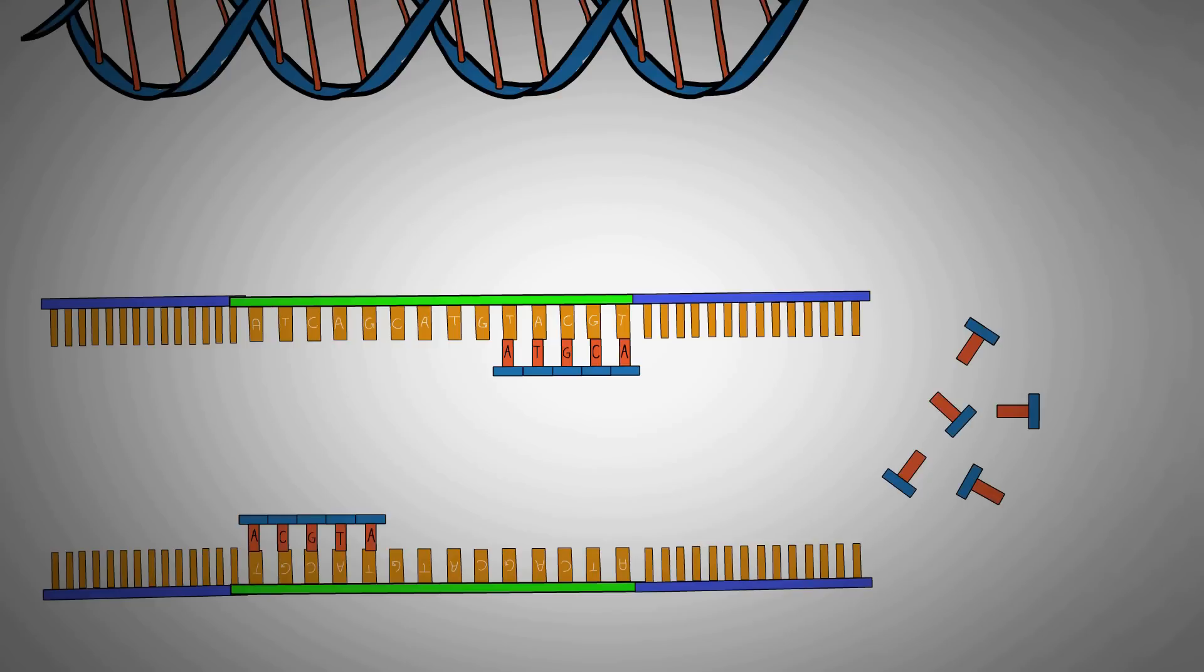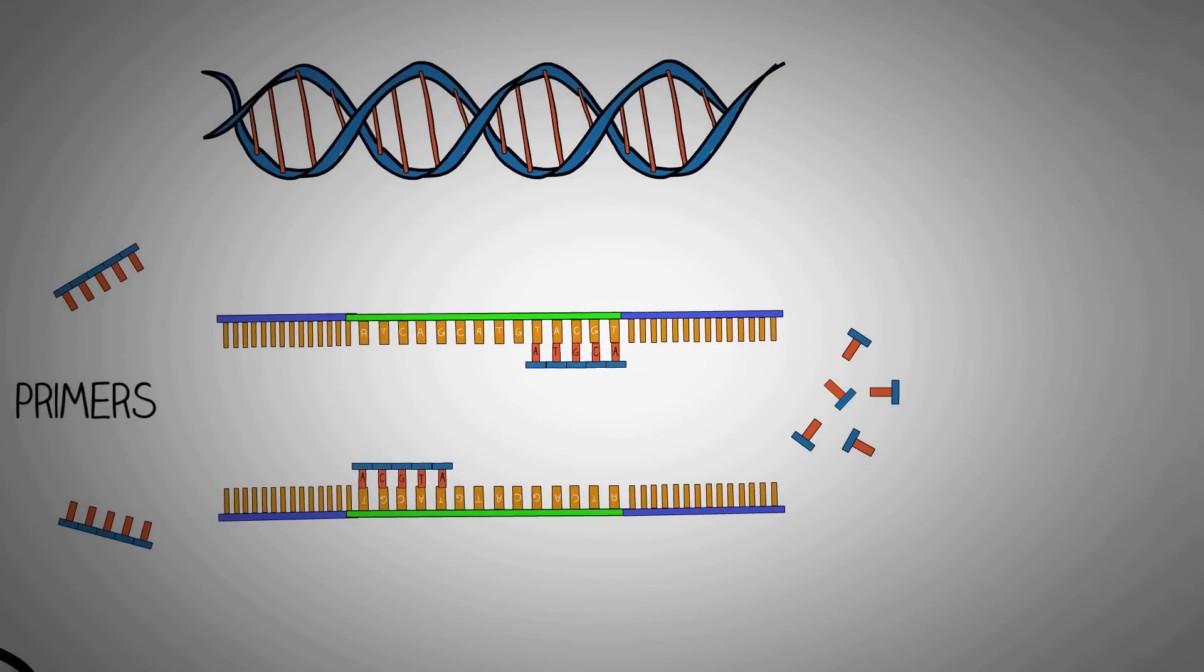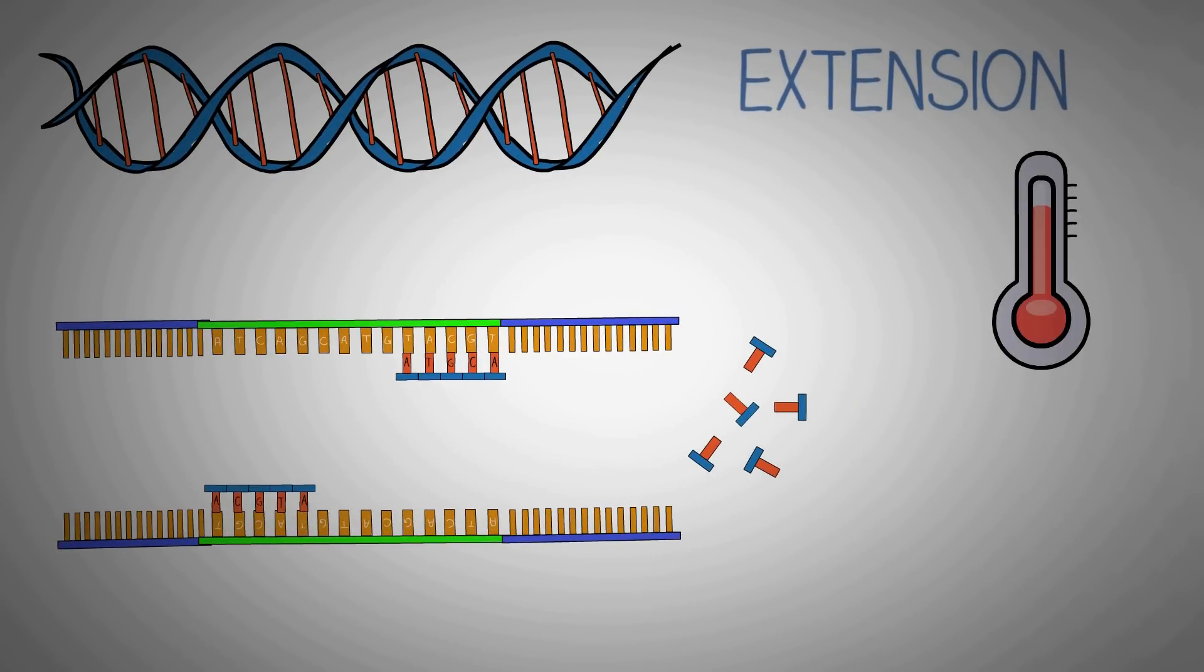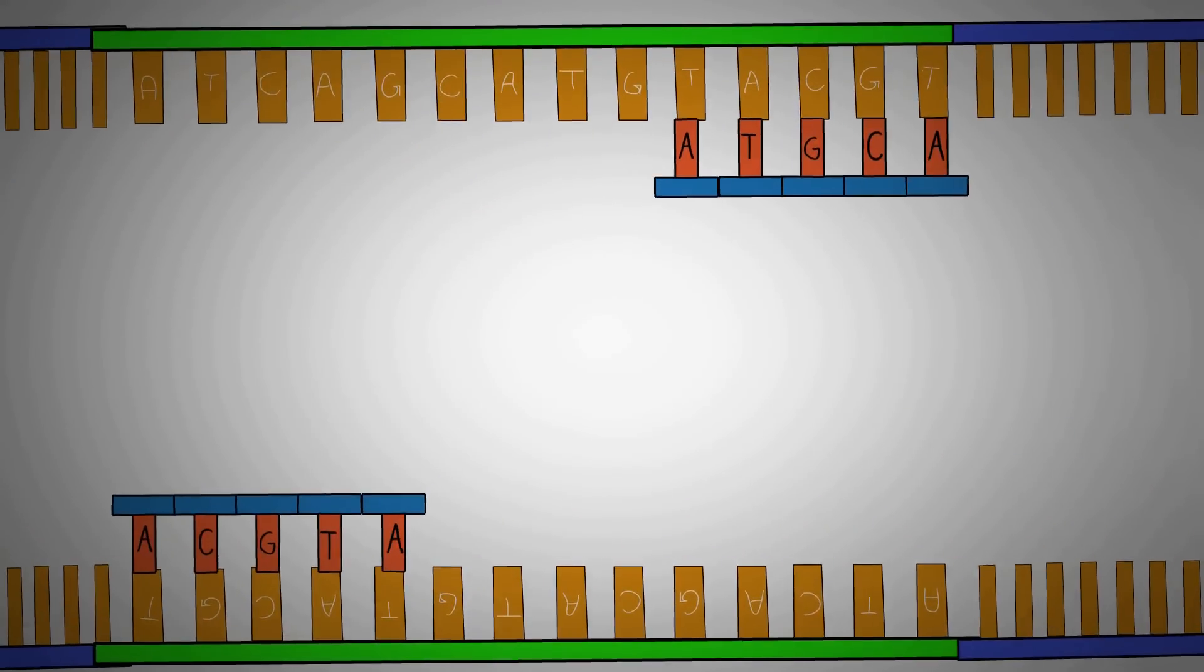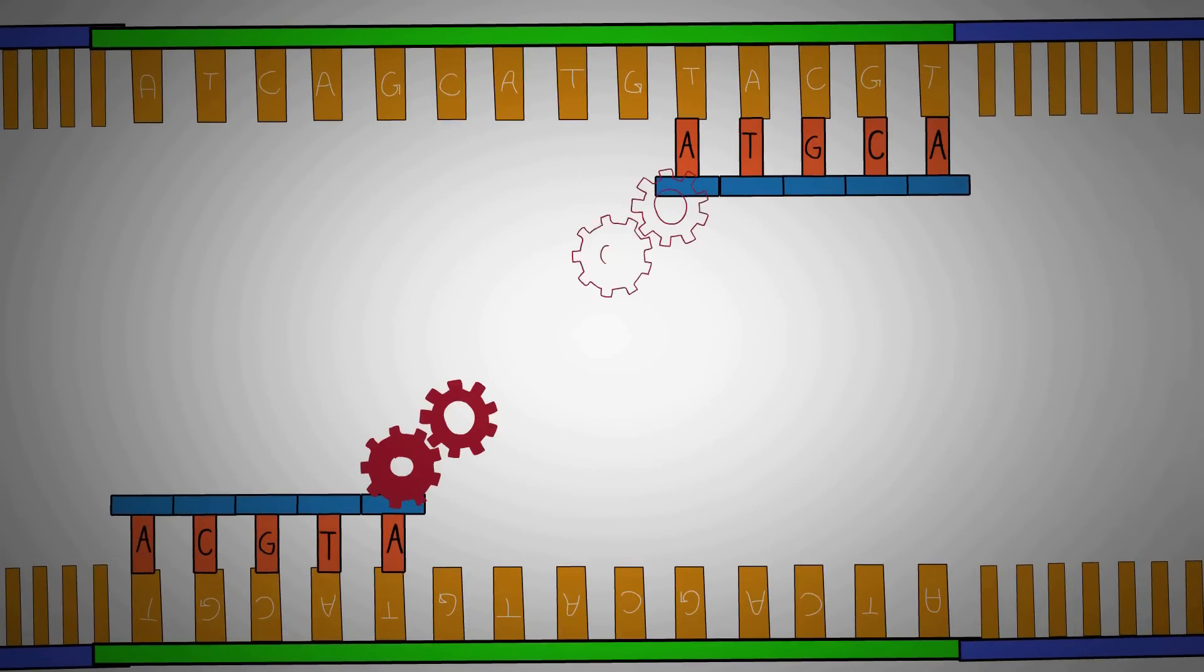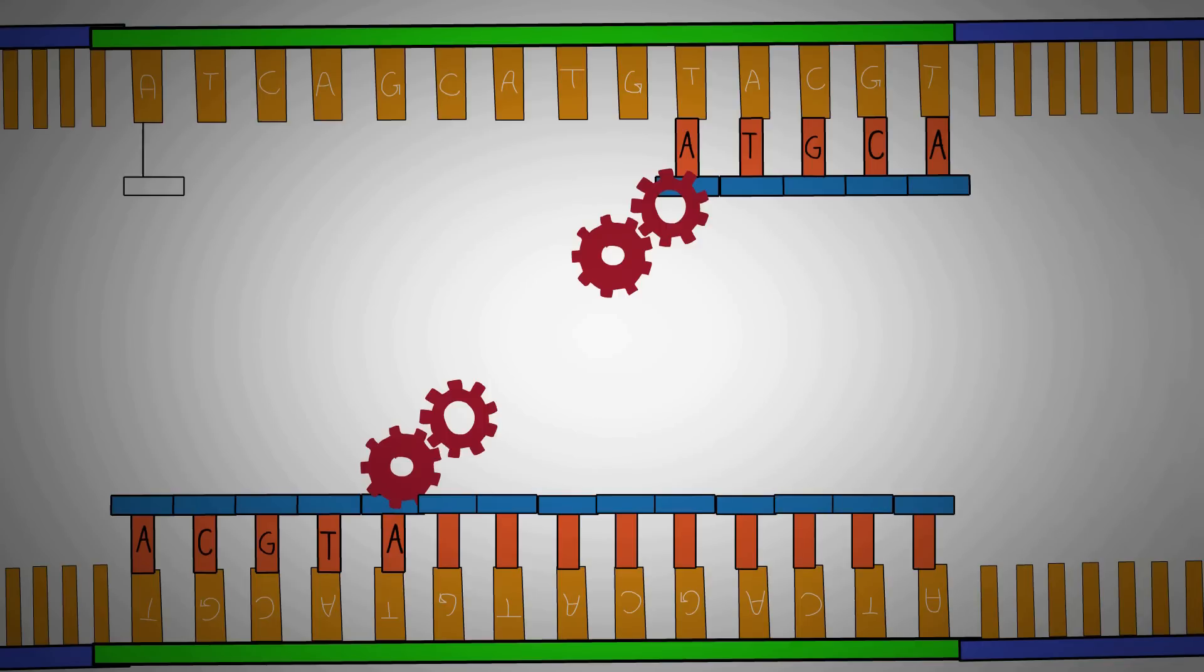Next comes the third step known as extension. For this we also require free nucleotides in these test tubes which will be basically used to make the new DNA. For extension we increase the temperature again to 72 degrees so that the Taq polymerase extends the primers, synthesizing new strands of DNA. Here you can see the Taq polymerase adding new nucleotides to the short sequence of the primer to form new strands of DNA which is complementary to the original strand. These ingredients are assembled in a tube along with cofactors needed by the enzyme and are put through repeated cycles of heating and cooling that allows new DNA to be synthesized.